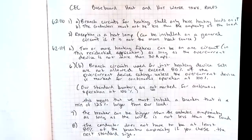Subrule 2 tells us that there is one exception: a heat lamp, say in a bathroom, can be installed on a general circuit if it is not the main heat source, so it would not have to go on its own circuit.